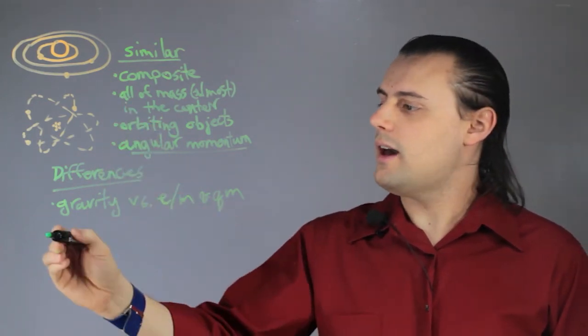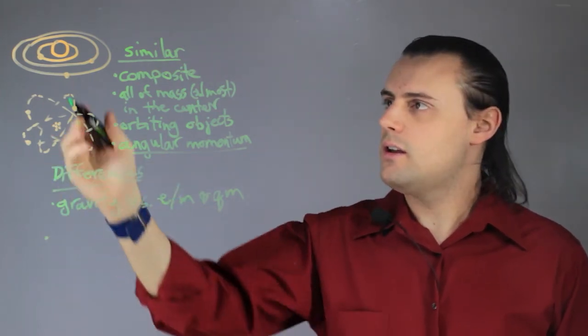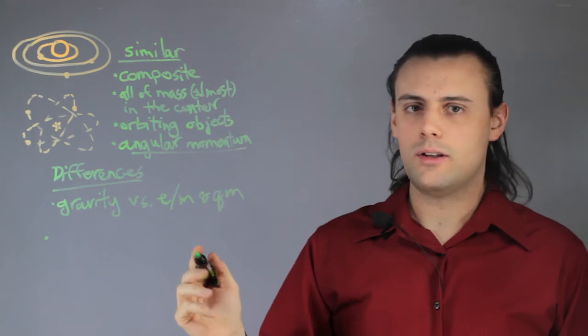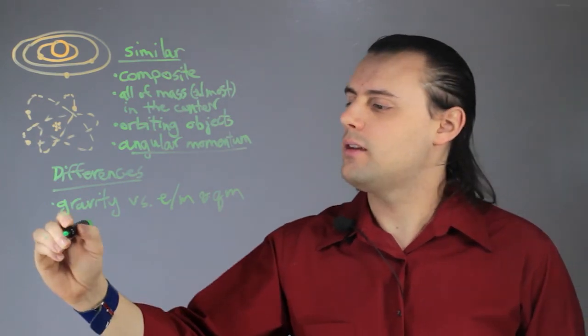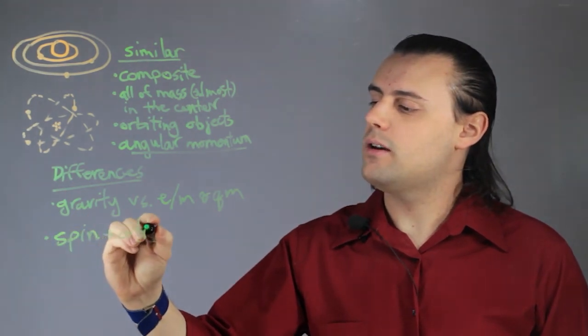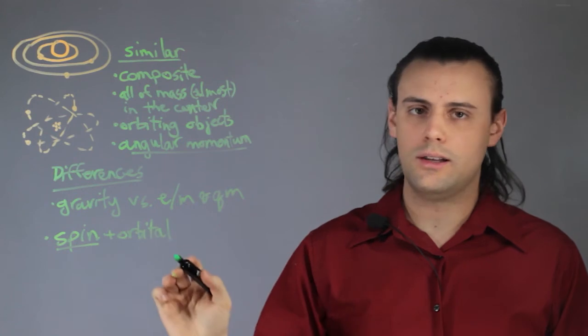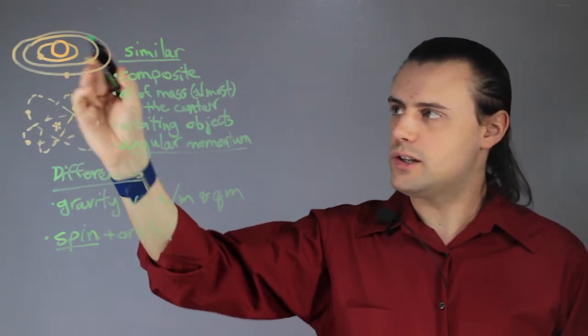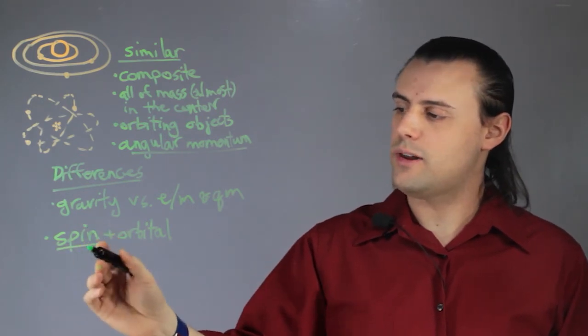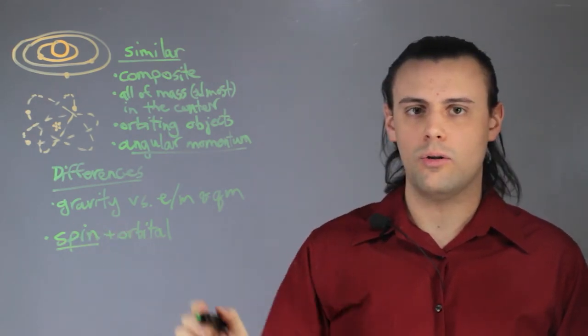Another big difference is that the atom actually has two types of angular momentum, whereas a solar system just has orbital angular momentum. An atom can also have spin angular momentum, so in addition to orbital it also has spin. And spin angular momentum in quantum mechanics is something that is inherently quantum mechanical. No classical object such as a solar system has this property because spin, there is no classical analog for this. This is a quantum property that is inherent in all quantum particles.